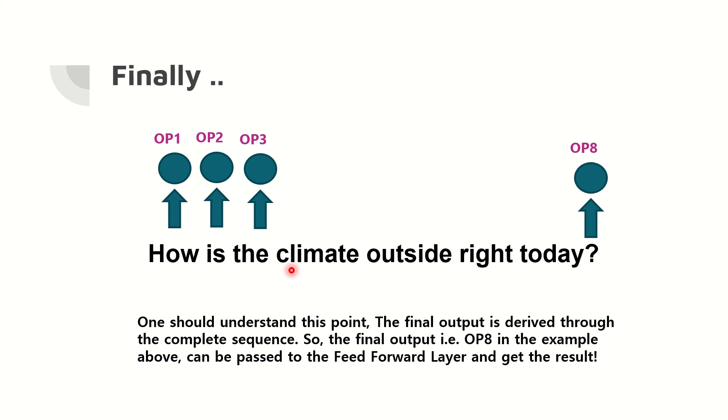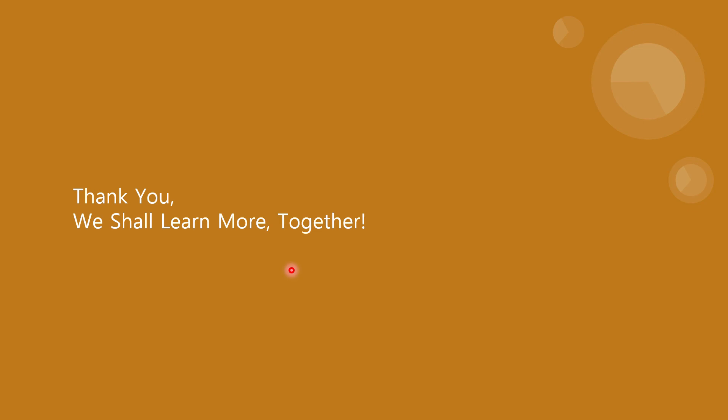In summary, RNN takes the current state input plus the previous state output to produce the output for the current state. We will learn more in the next session where I will clearly differentiate CNN from RNN with examples. If you have any questions or suggestions, please type them in the comment section. If you like this channel, please subscribe and refer it to your friends as well. Thank you.